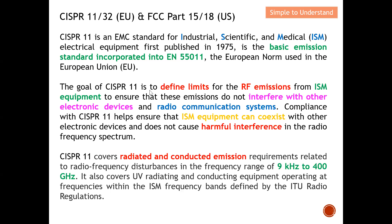The goal of CISPR 11 is to define limit lines for RF emissions from ISM equipment, to ensure that these emissions do not interfere with other electronic devices and radio communication systems. CISPR 11 addresses higher frequency equipment, because at higher frequencies there is more RF emission, and we need to ensure that ISM equipment does not create interference with other electronics devices or radio communication systems.